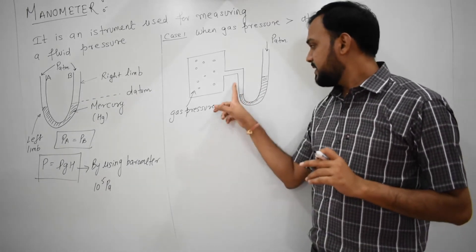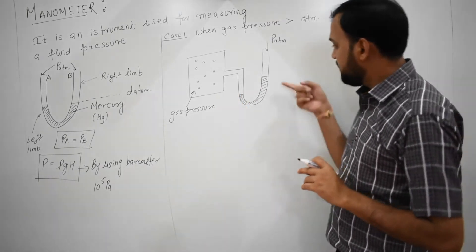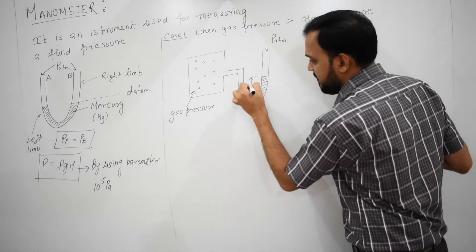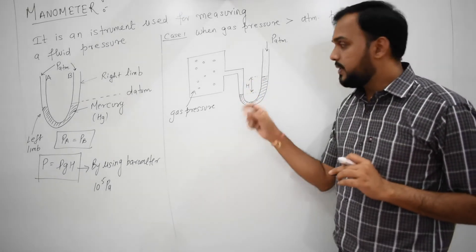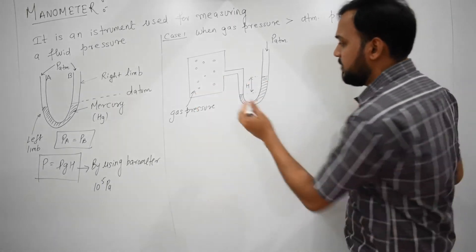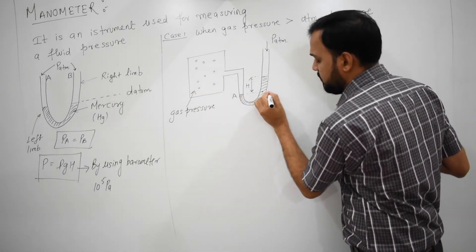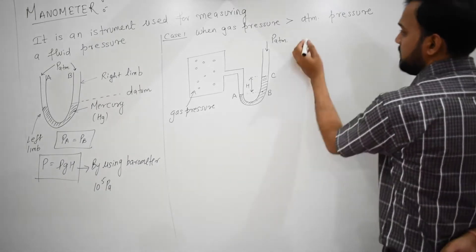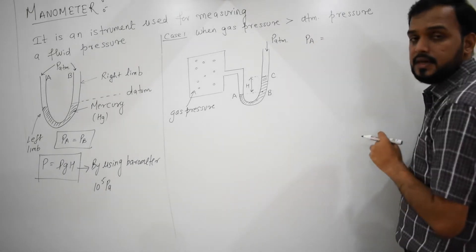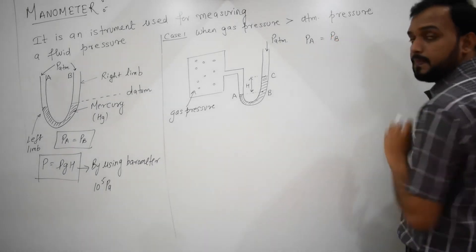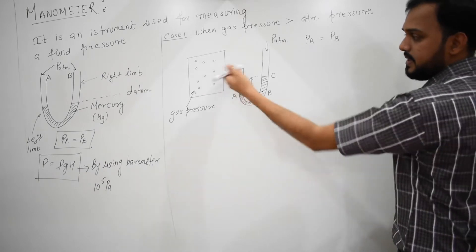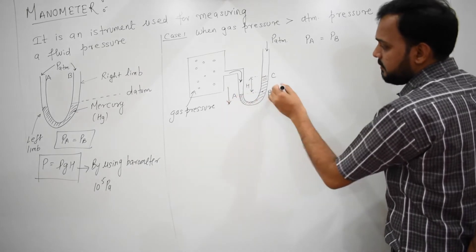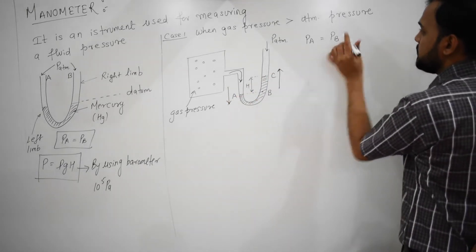You can see that from this side the mercury is going down, and from here the mercury is rising up. So you get a height difference. This height difference will help you calculate the gas pressure. I am taking one point A here, one point B here, and at this place I am taking point C. Whatever is the pressure at point A is equal to pressure at point B. The pressure at point A is actually the gas pressure — it is the pressure of the gas making the mercury go down from here and rise up from here.